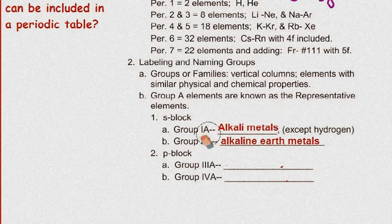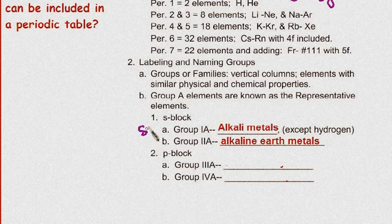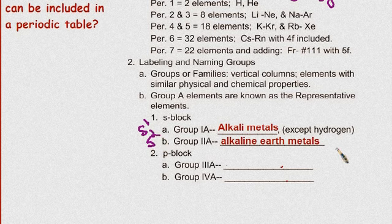Group 2A are the alkaline earth metals. Two different names. Okay, the S1 group are the alkali metals. The S2 group, in fact let's write them in there. The 1A, the S block, S1, are the alkali metals. The S2 are the alkaline earth metals.